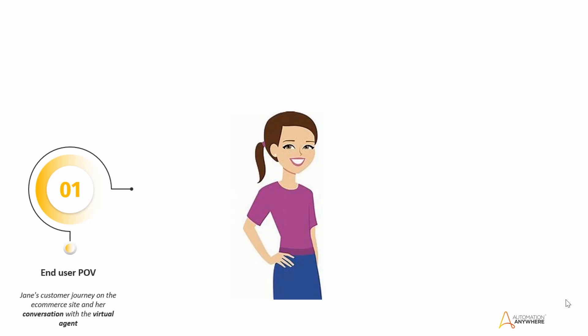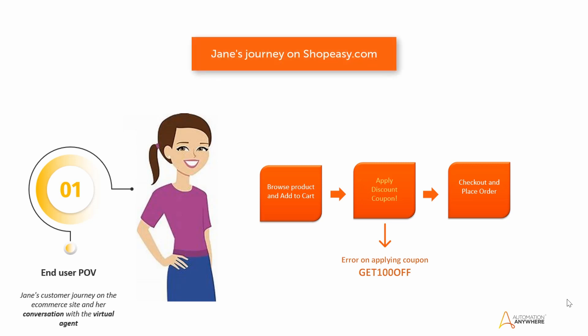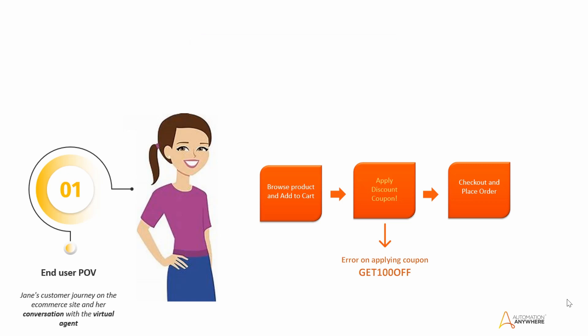Let's start with the end user's journey on the eCommerce site and her conversation with the virtual agent. Meet Jane, who is shopping for a fitness tracker on ShopEasy.com. Jane adds a product to her cart and applies the discount coupon prior to making the payment. She notices an error upon applying the discount coupon and starts a dialogue with Mia, ShopEasy's virtual agent, explaining that she has a coupon code but is unable to apply it to her shopping cart.